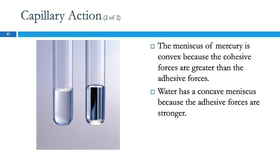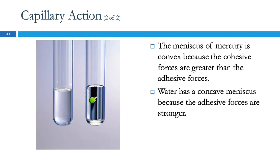This also explains the meniscus. In a glass test tube with water, the surface of the water is curved — that's the meniscus. Adhesive forces between the water and the glass cause the water near the edge to go up. The tube is too large to pull the water all the way up, but it pulls the edges up and makes it curved. Here adhesive forces are stronger than the cohesive forces. Mercury's meniscus is upside down, because the cohesive forces between mercury molecules are greater than the adhesive forces between mercury and glass. Mercury doesn't like the glass, so instead of coming up like water does, it actually goes down.